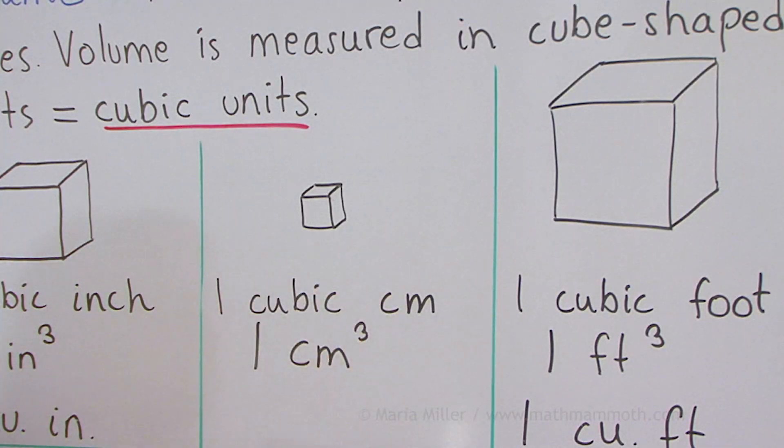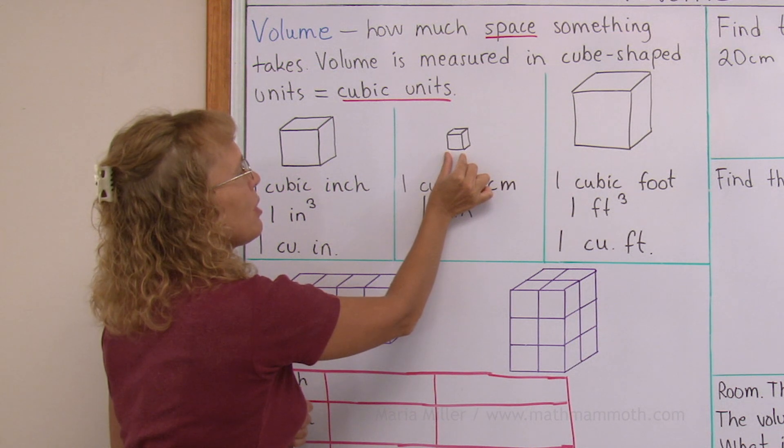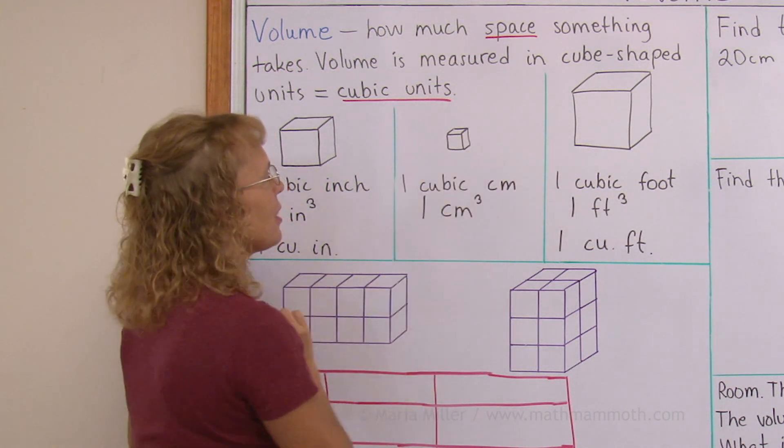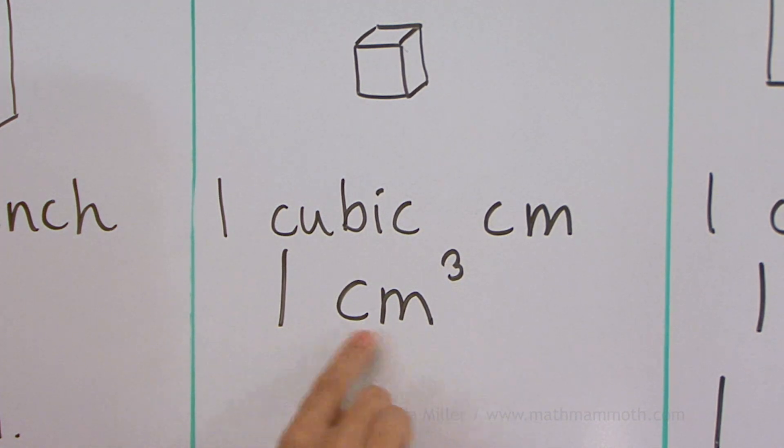Here's another cubic unit, this time one cubic centimeter. So there we would have one centimeter here, one centimeter for the depth, and one centimeter for the height. And the abbreviation is one cm elevated three, one cubic centimeter.